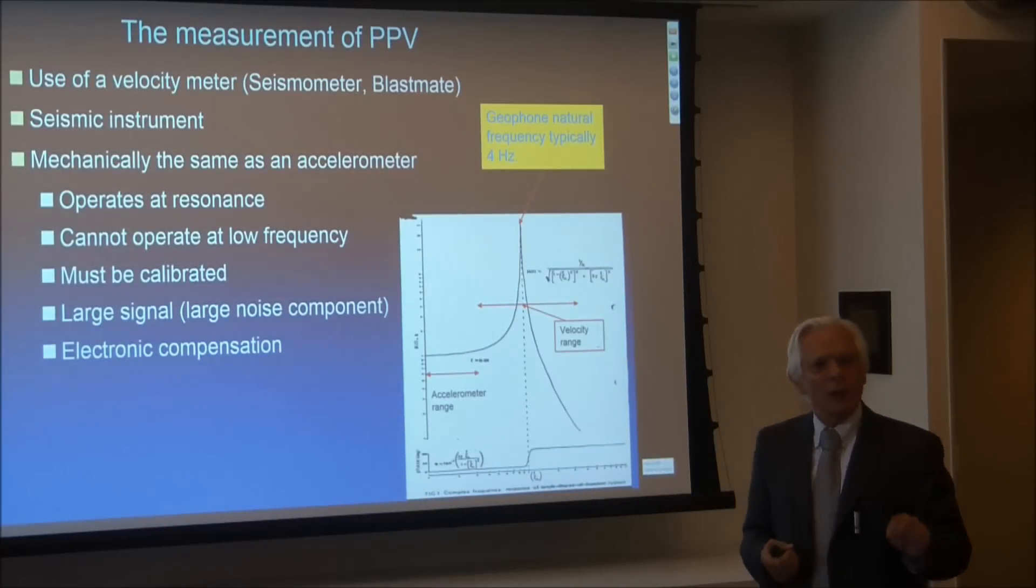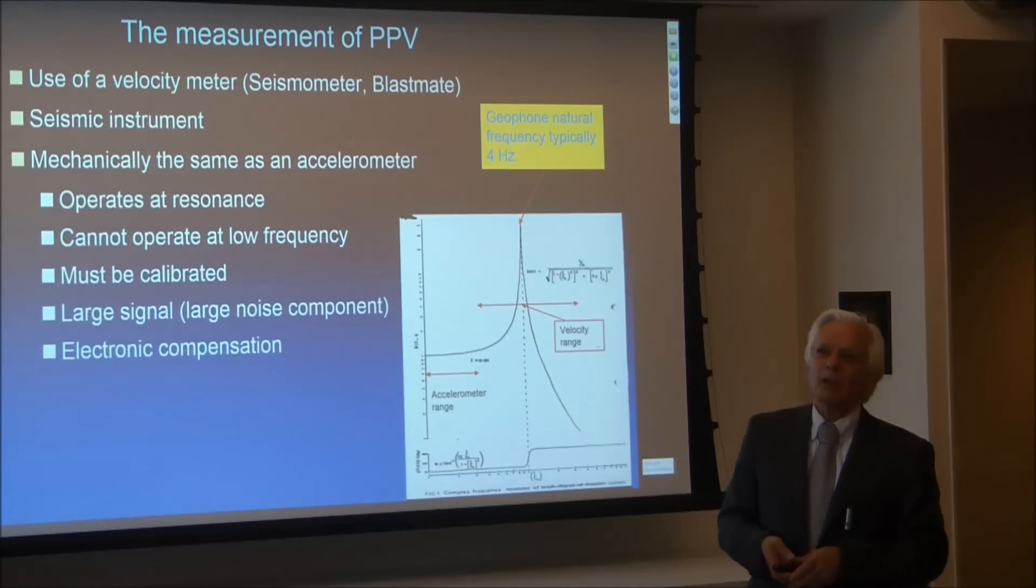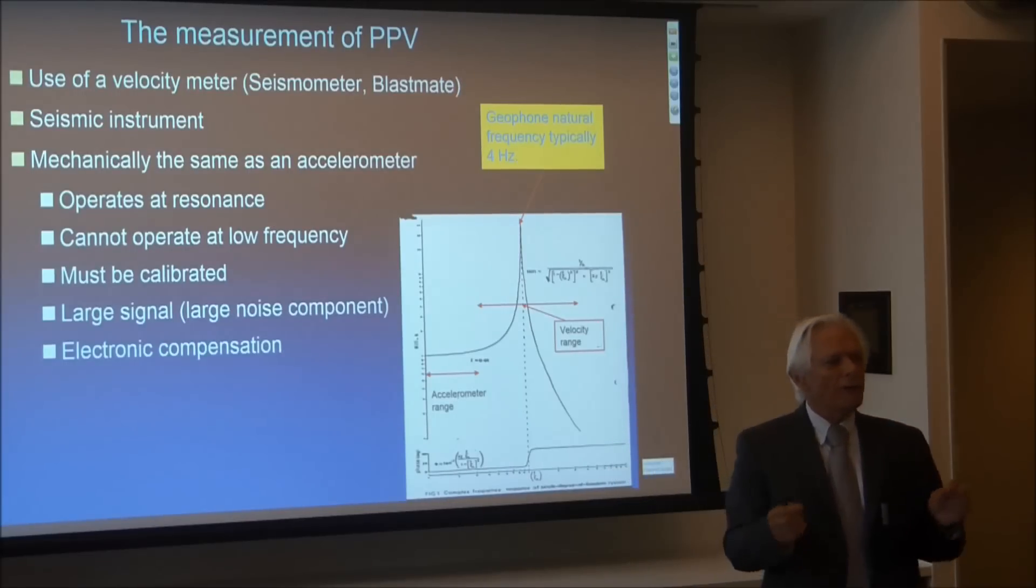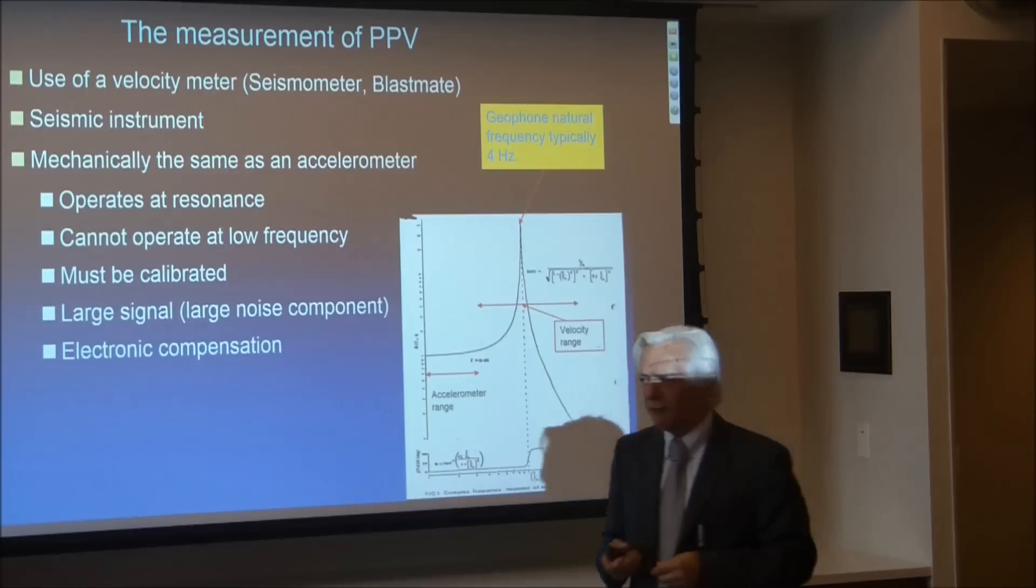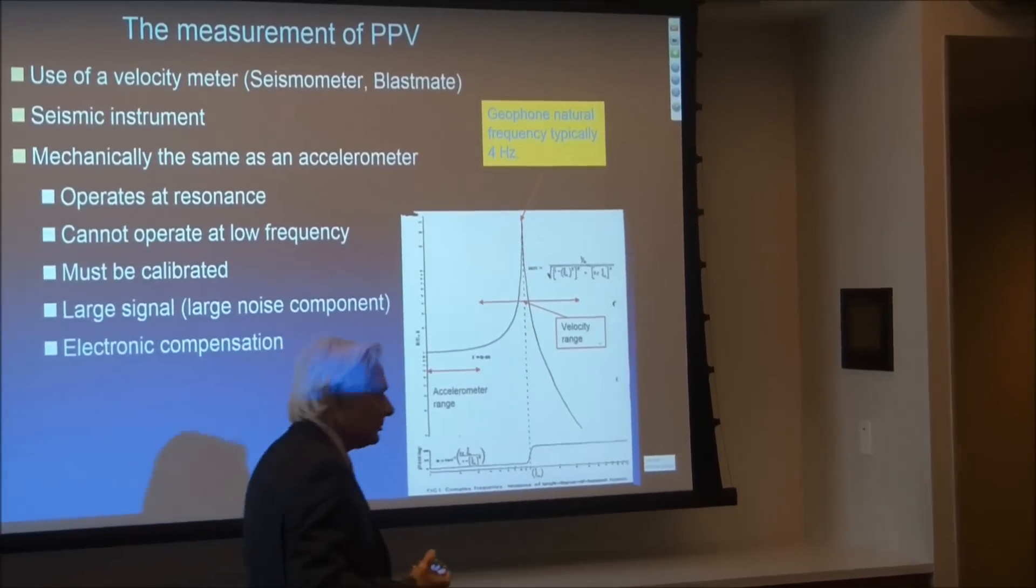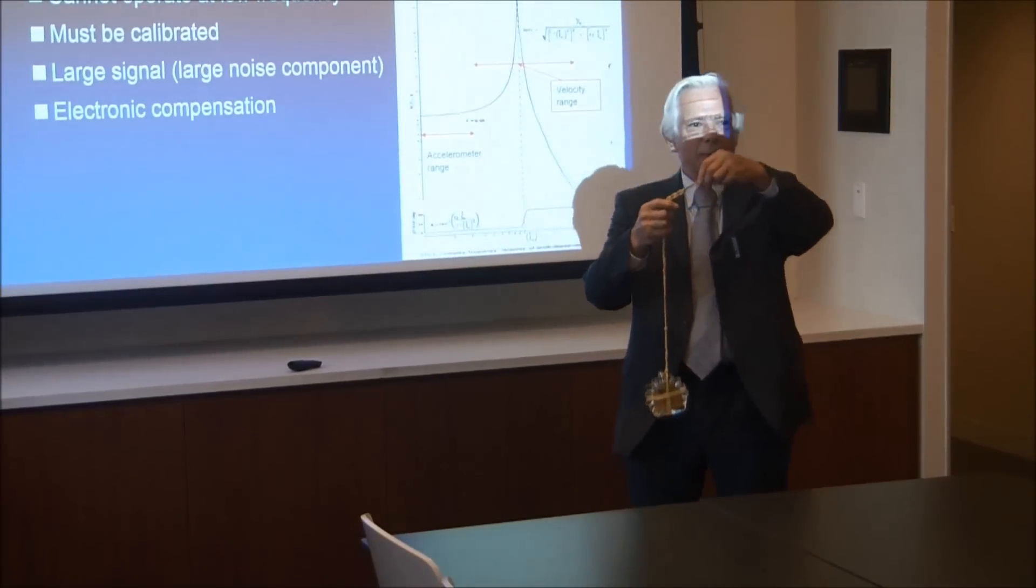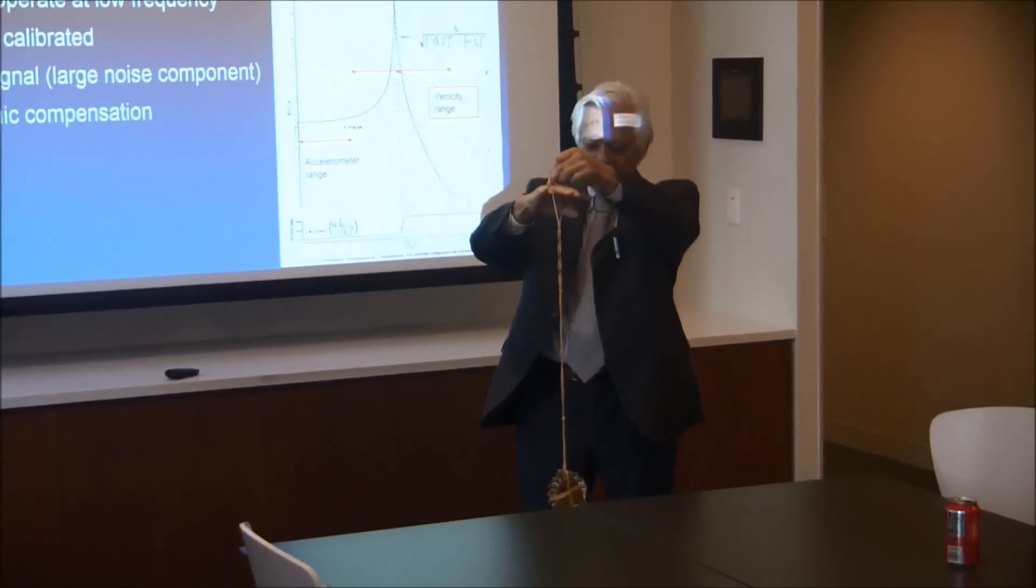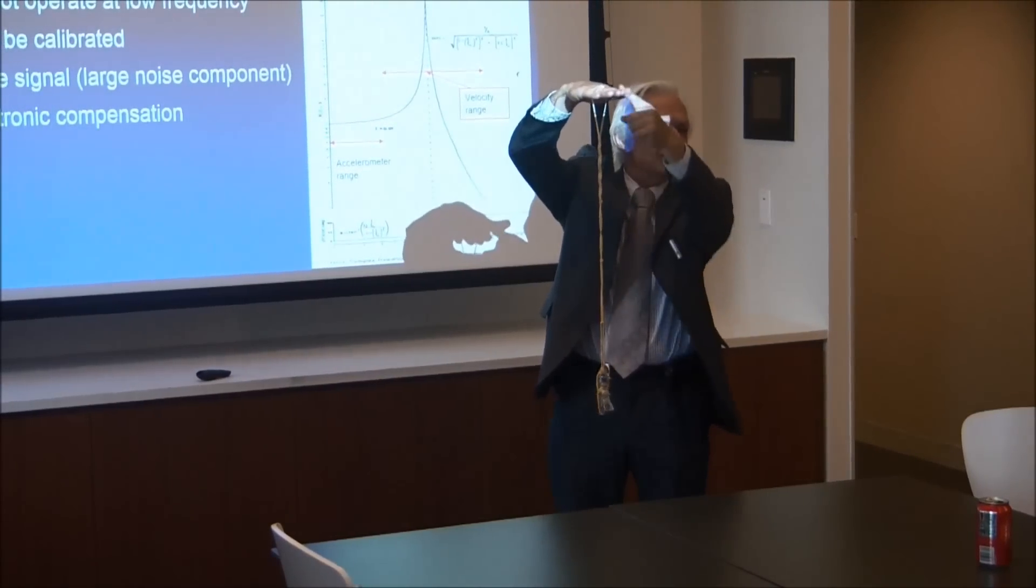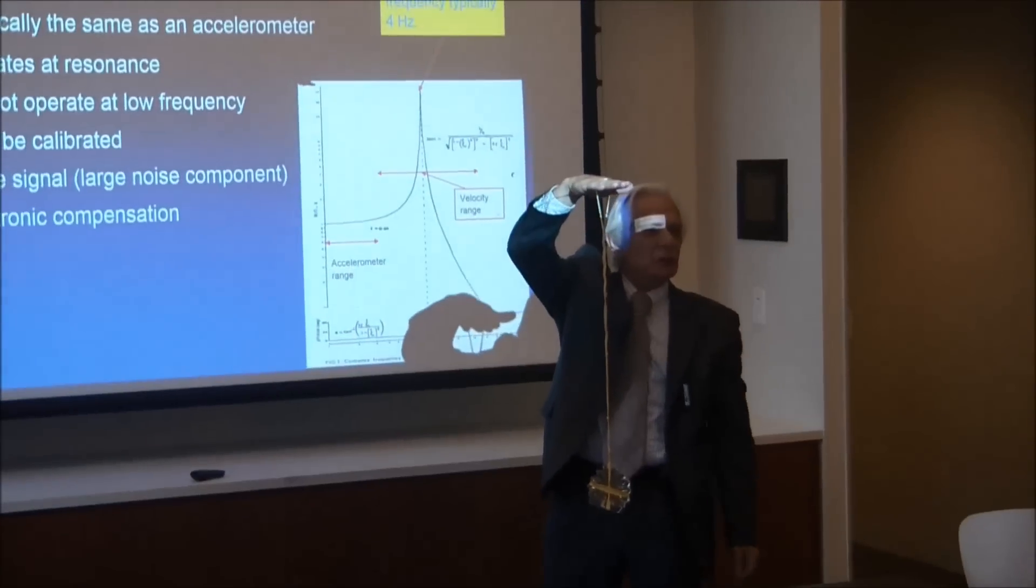Now I want to tell you about peak particle velocity and why it really isn't a good idea. What we have here is a diagram of the response of a single degree of freedom system. And I'm going to demonstrate a single degree of freedom system for you. This is a mass and a spring, and there is going to be damping in the system where energy is lost in the reaction with my hand or imperfect connections here.